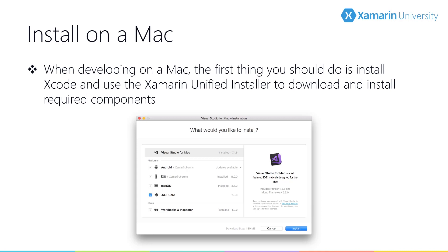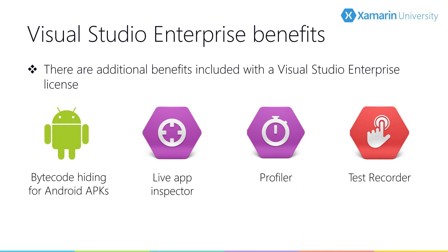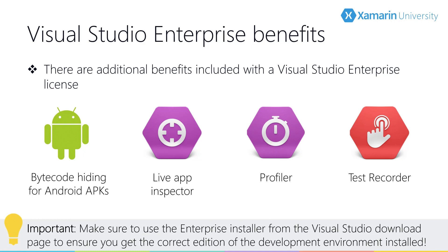If you have an Enterprise Visual Studio subscription, you can sign in with your account from the initial welcome screen to enable enterprise features. The Xamarin development tools are all free, and the compiler, the runtime, and the framework libraries are all open source and available from open.xamarin.com. However, those with a Visual Studio Enterprise license do have some additional features available. Make sure to use the Enterprise installer from the Visual Studio download portal. Visual Studio lists the edition on the welcome page — if it says Community, you're using the free version and not the Enterprise licensed version.